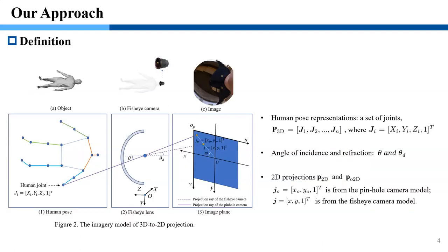Before introducing our approach, we first give a definition used in this paper. Figure 2 shows the projection model of 3D to 2D projection. Specifically, human pose is represented by a set of joints. After going through the fisheye lens, the angle of refraction is decreased from theta to theta d. Lower case g0 and g represent 2D projections based on the pinhole camera model and the fisheye camera model respectively.